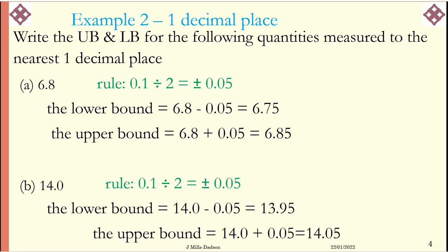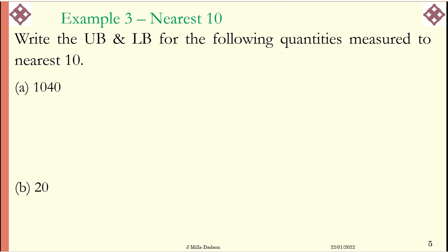So we always divide the given approximation clue by 2 to create a rule. Nearest 10. So the approximation clue here is nearest 10. So we take 10 and we divide it by 2 to create the upper and lower bounds for these two numbers.